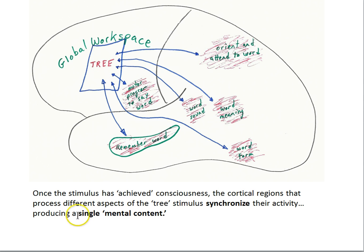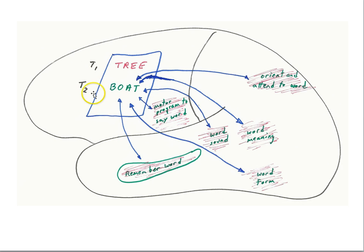That ends up producing this single mental content. If another word comes up on the screen that we consciously see, then the whole pattern of broadcasting will change — a new word will enter the working memory system and activate slightly different neural circuits in those same areas, corresponding to information about a different word. For example, if the word 'boat' is the next word we're conscious of, we're no longer conscious of 'tree.' A different set of looping neural communications will be set up corresponding to the conscious awareness of that different word.